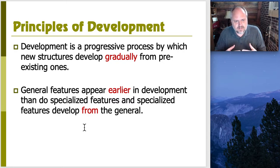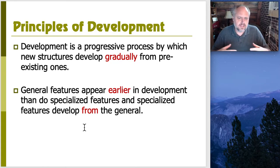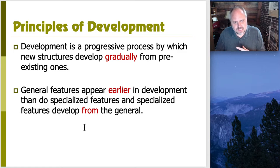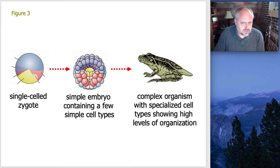It starts out very general early on as just a limb bud and then we create the limb, then we create the individual little fingers and so on. So specialized features definitely are going to come from more generalized features in that way. This is a really good summary of this whole progressive nature of development.